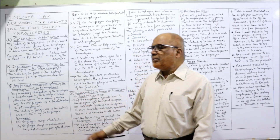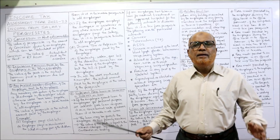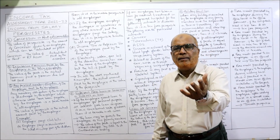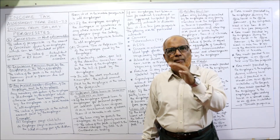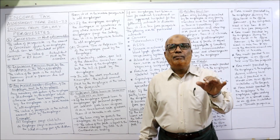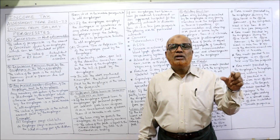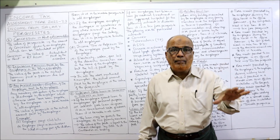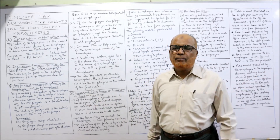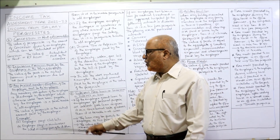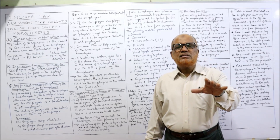The third point is insurance premium paid by the employer on the life policy of the employee or family members. Sometimes the life insurance policy is taken by the employee or in the name of family members, but the insurance premium is paid by the employer. Whatever insurance premium paid or payable by the employer is fully taxable as a perquisite in the hands of all employees.